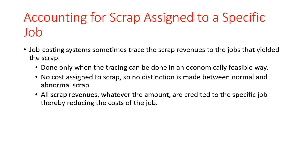The only distinction made is between scrap attributable to a specific job and scrap common to all jobs. Job costing systems sometimes trace scrap revenues to the jobs that yielded the scrap, but only when the tracing can be done in an economically feasible way. No cost is assigned to scrap, so no distinction is made between normal and abnormal scrap. All scrap revenues are credited to the specific job, thereby reducing the cost of that job.